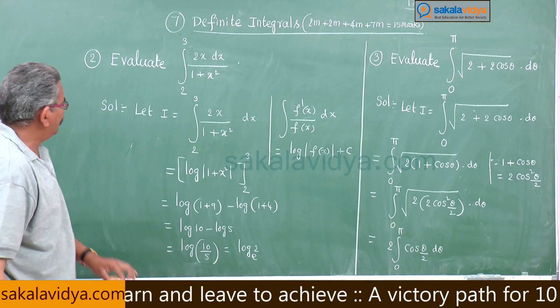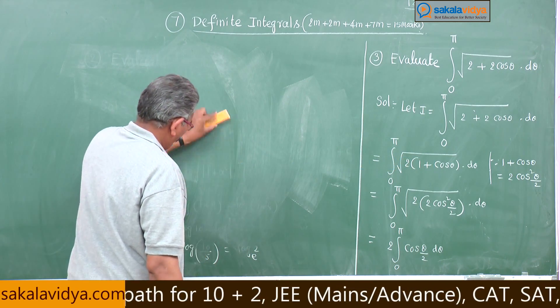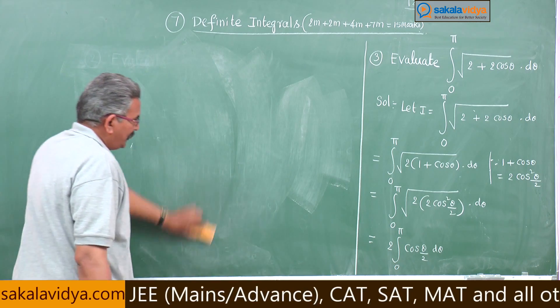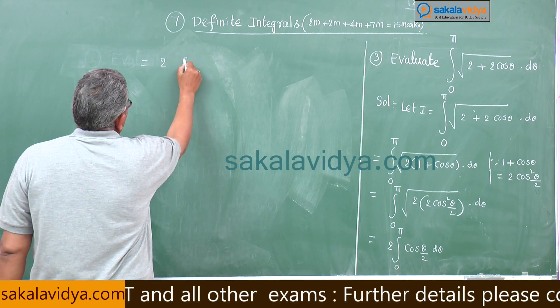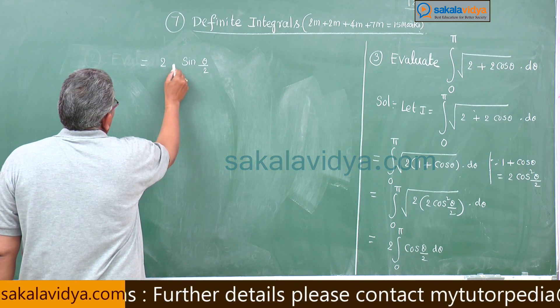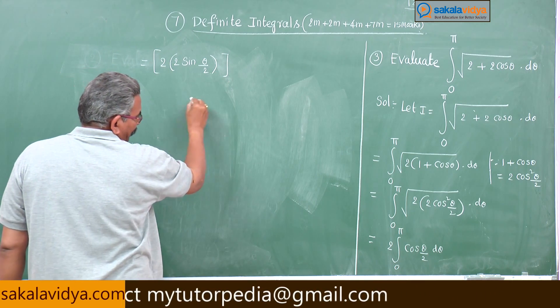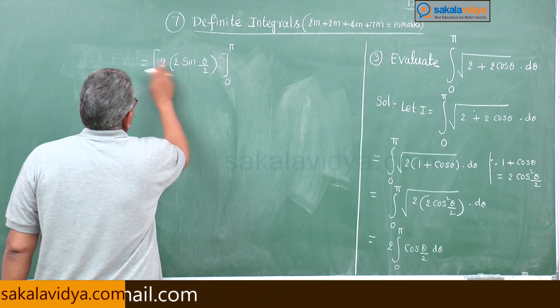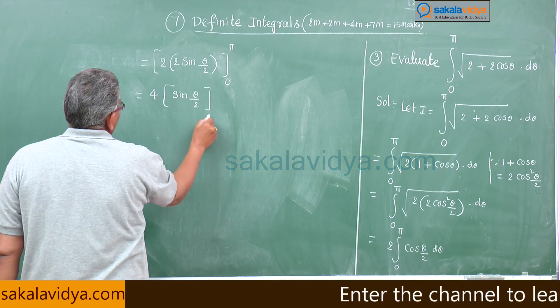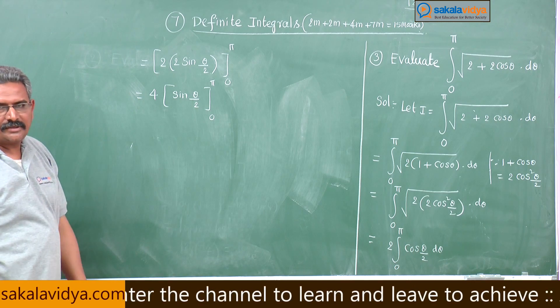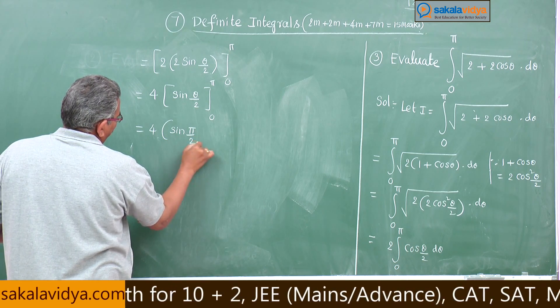Now integral cos theta by 2 we have to write. This is equal to 2 times integral of cos theta by 2 is sin theta by 2 by 1 by 2 means you get 2 sin theta by 2, limits here what do you get 0 to pi, 2 into 2, 4 common, we have sin theta by 2 in between 0 to pi.